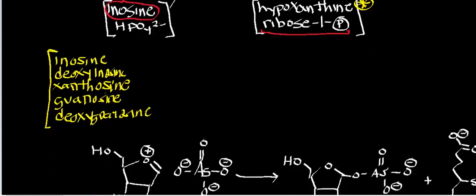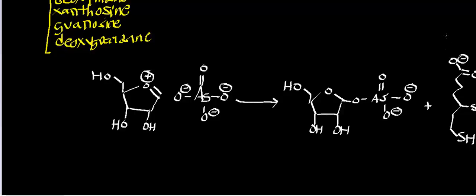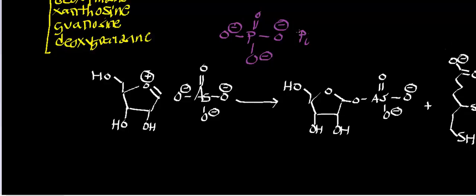Here's the application. Whenever you have an inorganic phosphate-dependent enzyme, there's always a chance of uncoupling of that reaction. For example, if you think back to glycolysis and the enzyme glyceraldehyde-3-phosphate dehydrogenase — that reaction depended on inorganic phosphate. Inorganic phosphate ultimately acted as a nucleophile, and that gave us 1,3-bisphosphoglycerate.